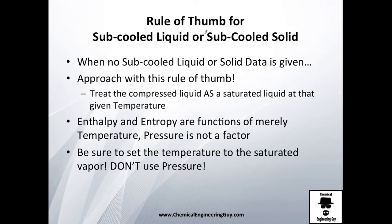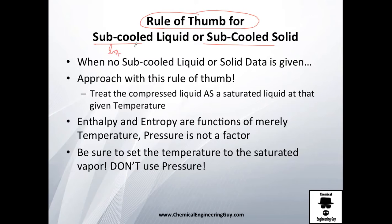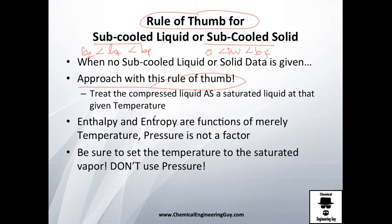We've seen how to get data from vapor tables, and there are many times in which you will need to apply rules of thumb for subcooled liquids or subcooled solids. This means liquid water between its boiling point and its freezing point, and solid water — which is ice — between its freezing point and absolute zero. When you have no data for these, you need to approach this with a rule of thumb.